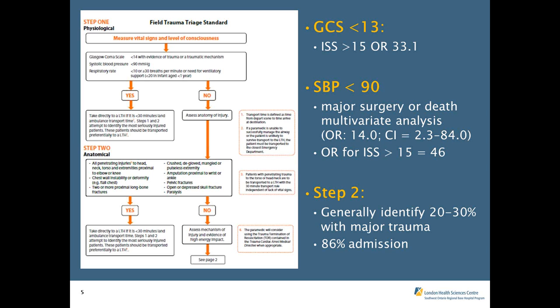One variable used is ISS — the Injury Severity Score. When you look at trauma systems, ISS is retrospectively calculated by looking at six organ systems, grading injury from one through five. An unsurvivable injury is a five. The score takes the sum of the squares of the top three most injured organ systems, giving a maximum of 75. We know retrospectively that once ISS exceeds 15, this is where the real benefit from trauma systems occurs. The system is designed to capture patients with ISS greater than 15 and bring them to a trauma hospital.